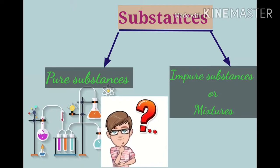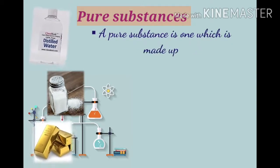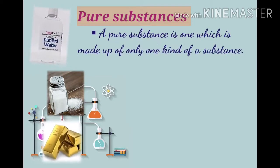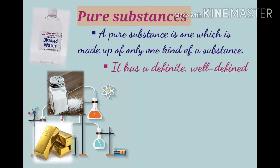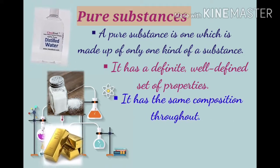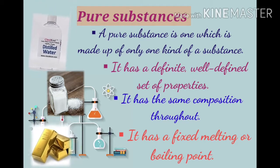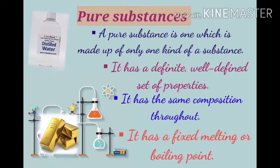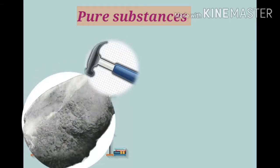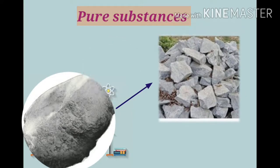So what is a pure substance? A pure substance is one which is made up of only one kind of substance. It has a definite, well-defined set of properties. It has the same composition throughout. A pure substance has a fixed melting or boiling point. For example, take a piece of stone and break it into a number of smaller parts. All the parts are made up of only one kind of particles. Such a substance is called a pure substance.